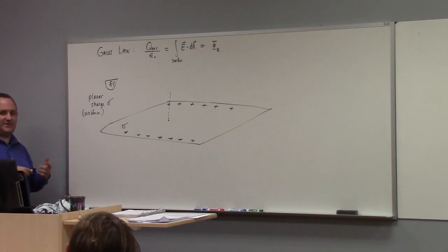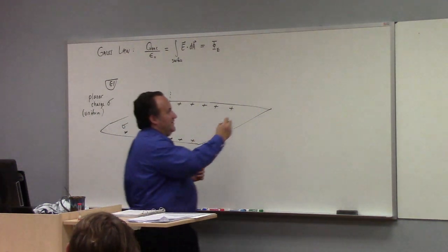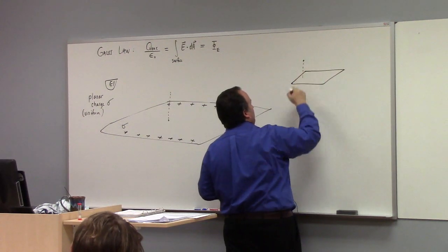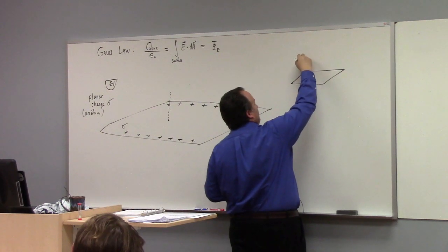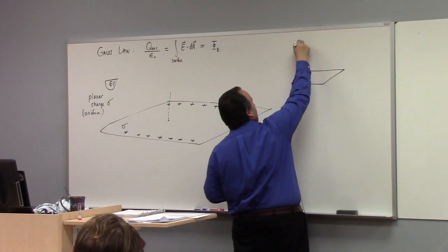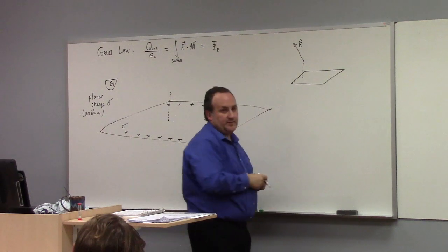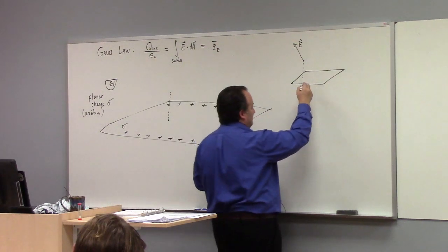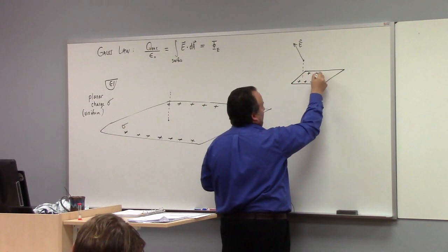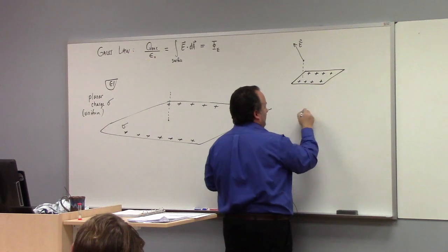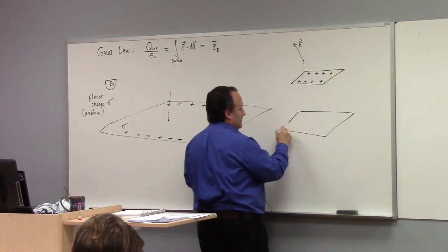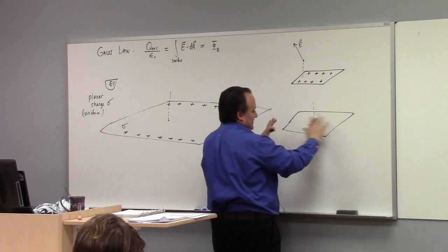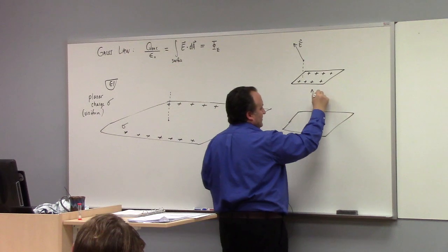Unless the plane was finite. Like if we're talking about a little rectangle of charge and I asked what's the electric field right there, the answer would probably be something kind of like this. But if we're right smack dab in the middle above it and it was symmetrically situated, then again the electric field should be straight up.